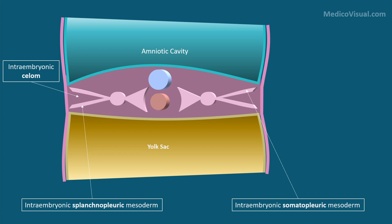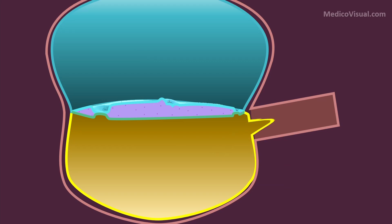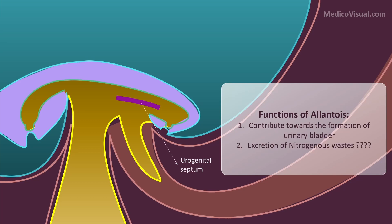In the third week allantois also forms. It is a sausage-like diverticulum that arises from the yolk sac into the connecting stalk. It functions in excretion of waste materials in the early embryo and forms part of urinary bladder as the embryo develops.